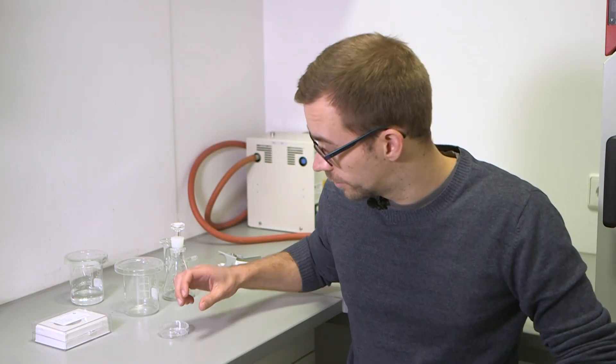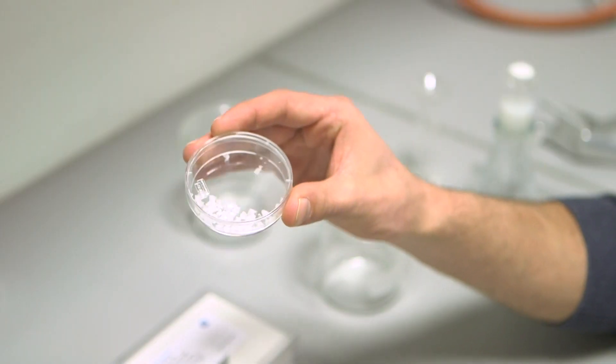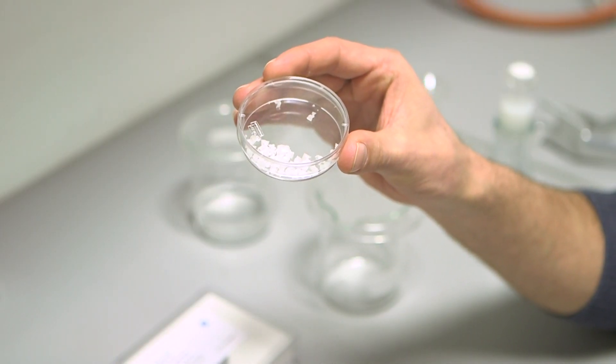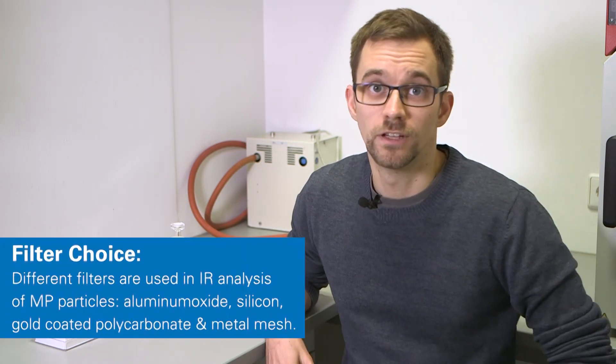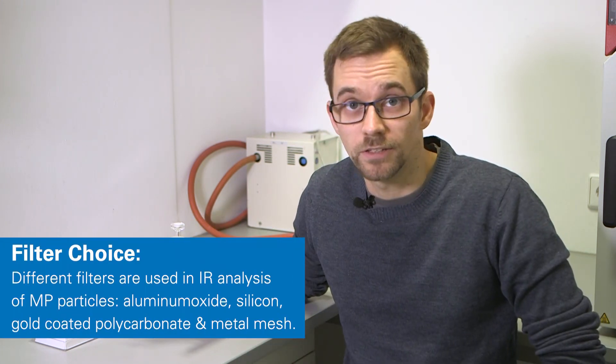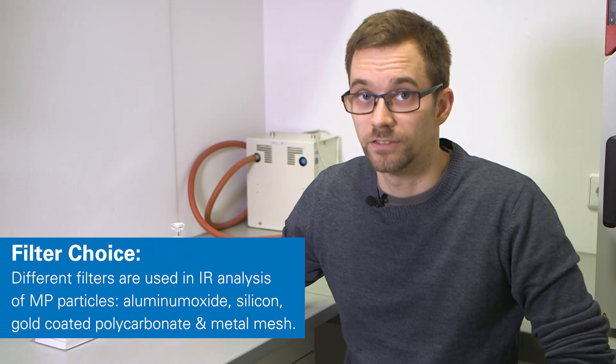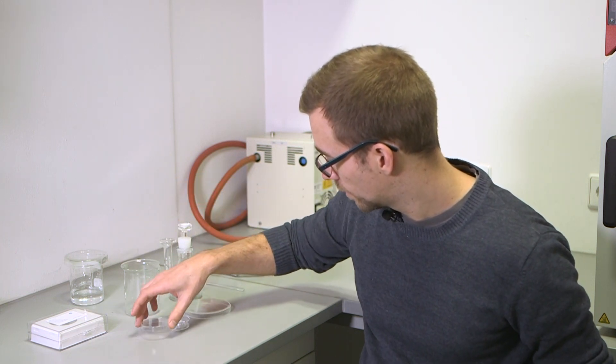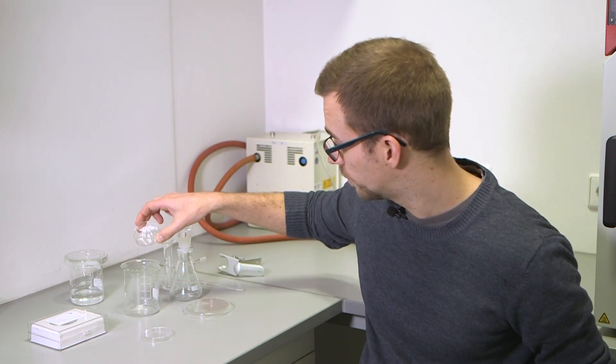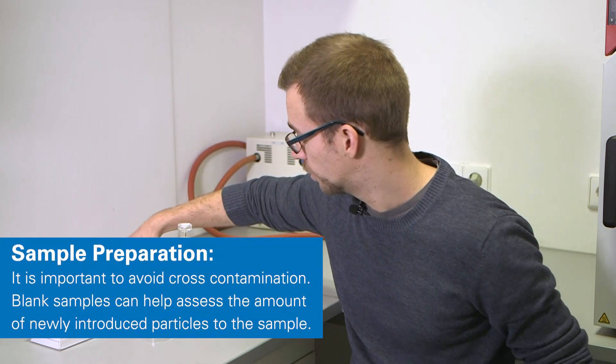We're now in our laboratory and we're going to take care of the sample preparation. So that means we're going to dissolve our sea salt sample in distilled water and then filter it through aluminum oxide filters. There are several different filter types like silicon or gold-coated polycarbonate, but we will be using these. I'm going to pour our salt sample into the beaker and then we'll dissolve it in distilled water.